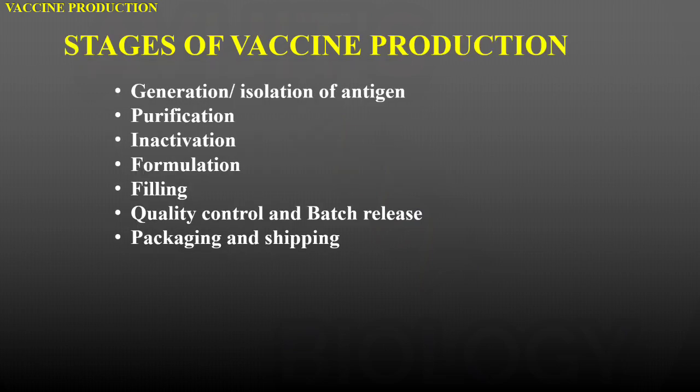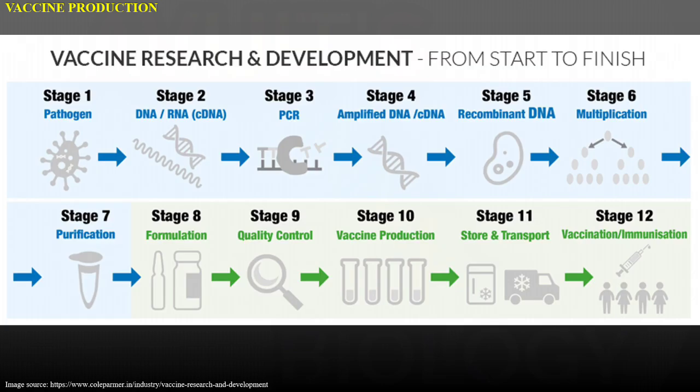Now there are several stages involved in vaccine production. First of all, generation or isolation of antigen, then purification, then inactivation, then formulation, then filling, then quality control and batch release, and finally packaging and shipping. Now this is a flowchart of the steps involved in vaccine production.